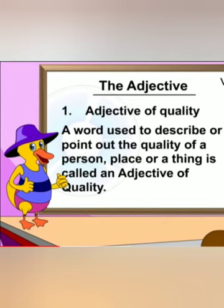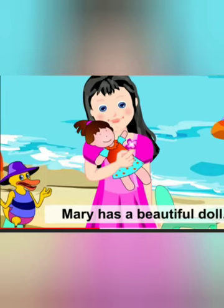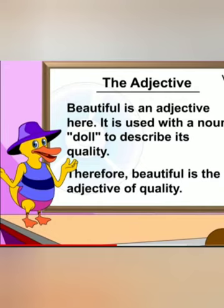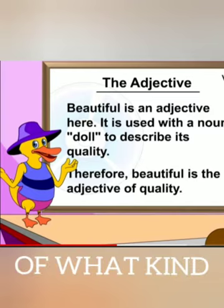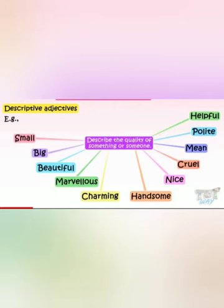Number one, the adjective of quality. A word used to describe or point out the quality of a person, place, or a thing is called an adjective of quality. For example, Mary has a beautiful doll. Here, beautiful describes the doll — a noun — and it gives the answer of what kind. Some other examples are charming, handsome, cute, etc.